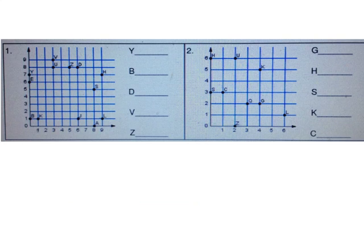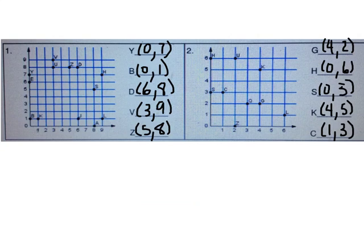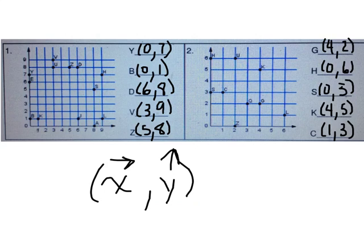Now try a couple completely on your own. Look at number one — fill in the ordered pairs for each letter. Y is at (0, 7). B is at (0, 1). D is at (6, 8). V is at (3, 9). Z is at (5, 8). For number two: G is at (4, 2). H is at (0, 6). S is at (0, 3). K is at (4, 5). C is at (1, 3). Remember, we always write our ordered pair x — horizontal — then y — vertical. Over first, and then up.